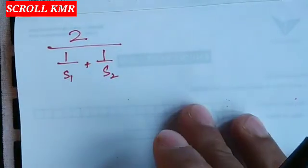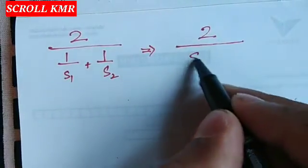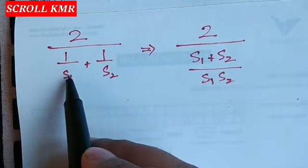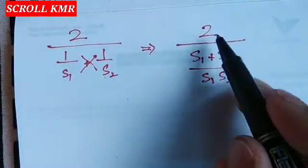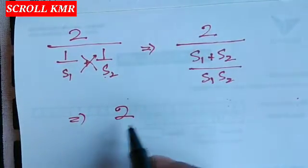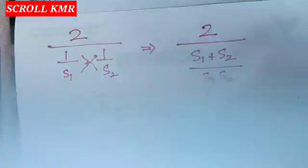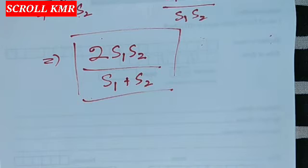Now: 2 divided by (1/s1 + 1/s2)۔ 1/s1 + 1/s2 = (s2 + s1)/(s1·s2) by cross multiplication۔ So total speed = 2 divided by (s1+s2)/(s1·s2) = 2·s1·s2 / (s1+s2)۔ آپ کو یاد ہوگا میں نے پہلے بتایا تھا کہ formula ہے 2·s1·s2 / (s1+s2) — دیکھیں وہی formula ہم نے یہاں exactly derive کی ہے۔